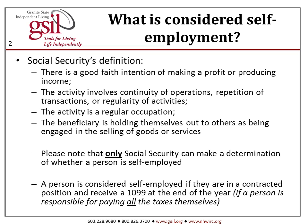What is considered self-employment? Social Security's definition of self-employment is there is a good faith intention of making a profit or producing income. The activity involves continuity of operations, repetition of transactions, or regularity of activities. The activity is a regular occupation. The beneficiary is holding themselves out to others as being engaged in the selling of goods or services. Please note that only Social Security can make a determination of whether a person is self-employed. A person is considered self-employed if they are in a contracted position and receive a 1099 at the end of the year, or if they are responsible for paying all the taxes themselves.